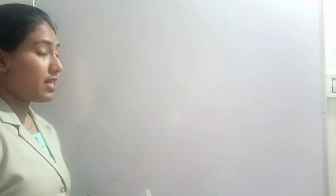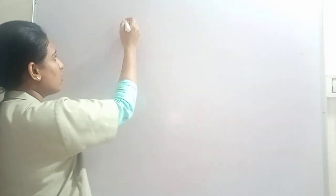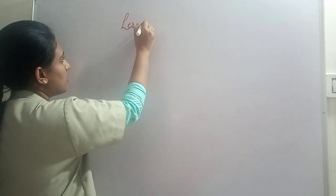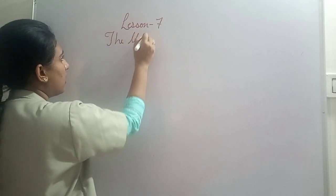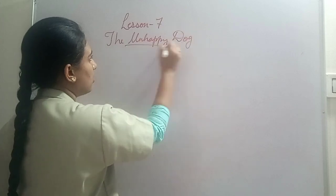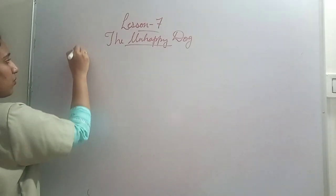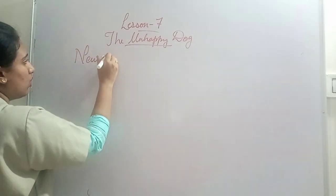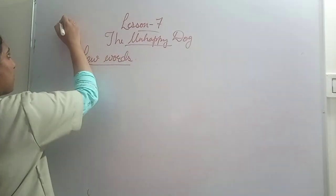Now what we are going to do today is learn the new difficult words in the lesson. First I will write down the heading. Till that, take out your classwork copy, your pencil, eraser, all that you need and get ready to write down the questions. I will write down the lesson name: Lesson 7, The Unhappy Dog. What you have to do is put a heading down: New Words.